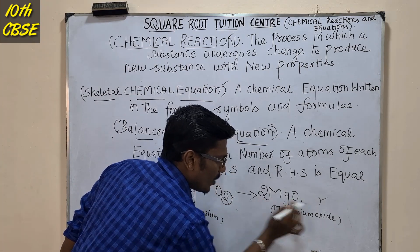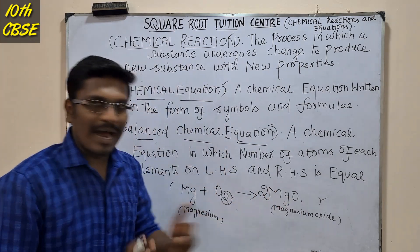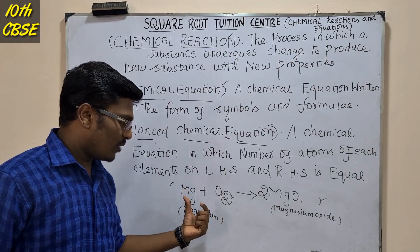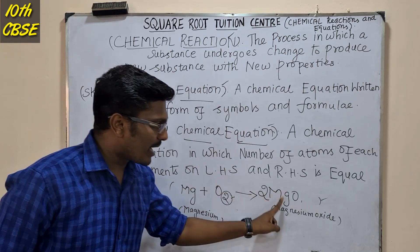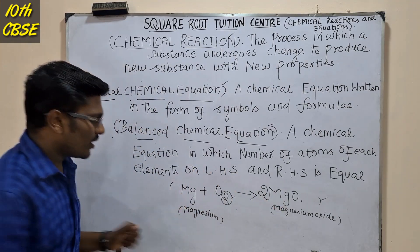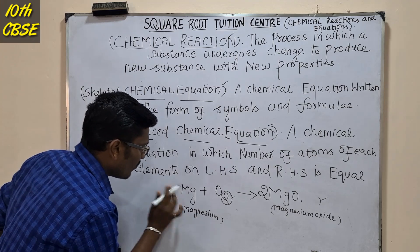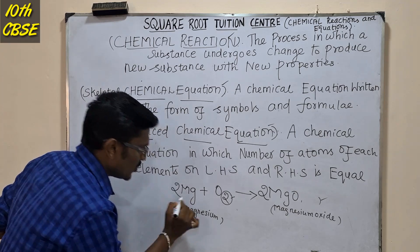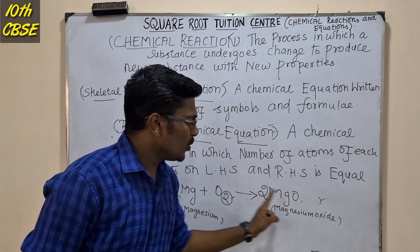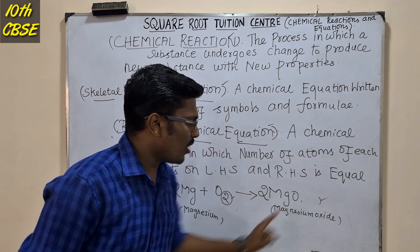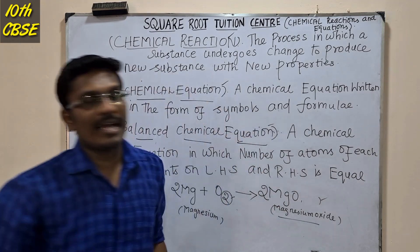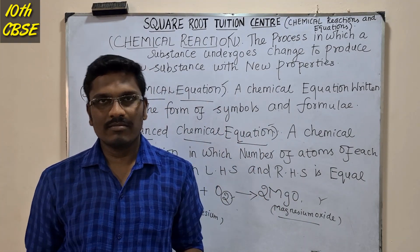So two ones are two, so oxygen is balanced. We put two on the magnesium side — two magnesium, two oxygen — and on the product side we get two magnesium oxide: 2Mg + O₂ → 2MgO.